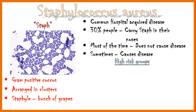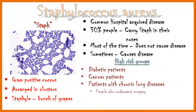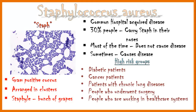High-risk groups which may develop staph infection include the following: diabetic patients, cancer patients, patients with chronic lung diseases, people who underwent surgery, people who are working in healthcare systems, and patients with medical devices inserted in their body.